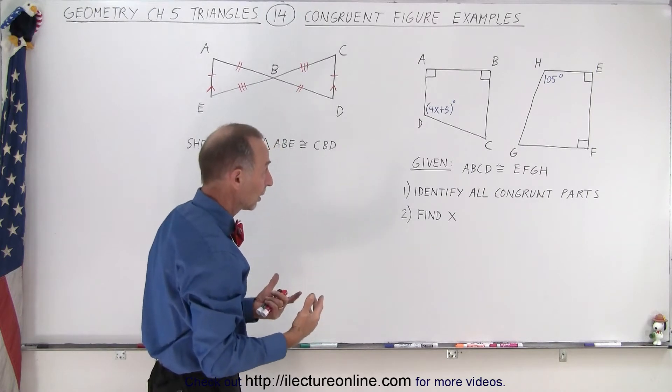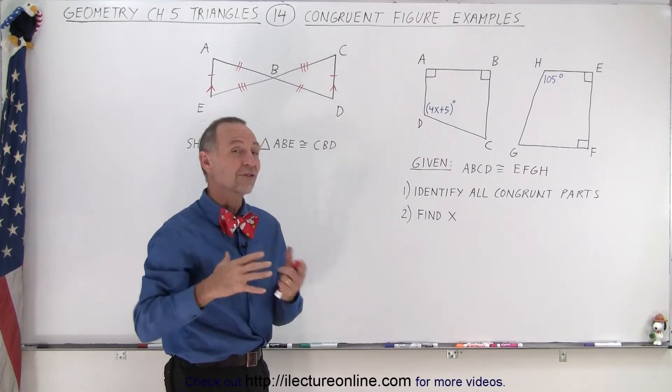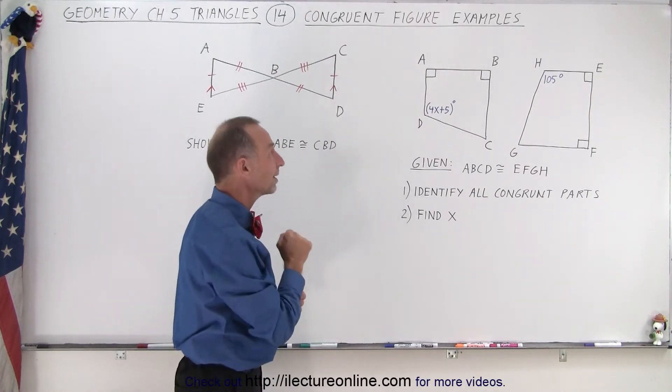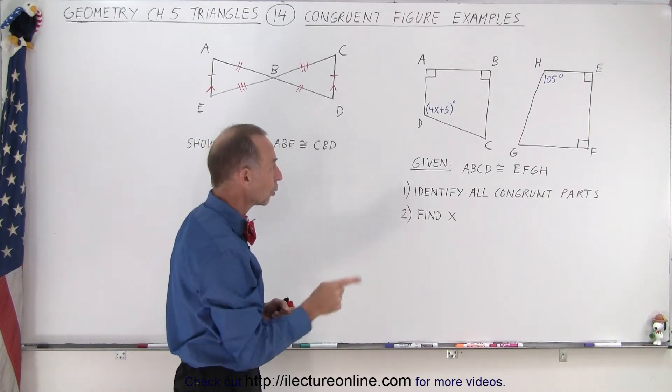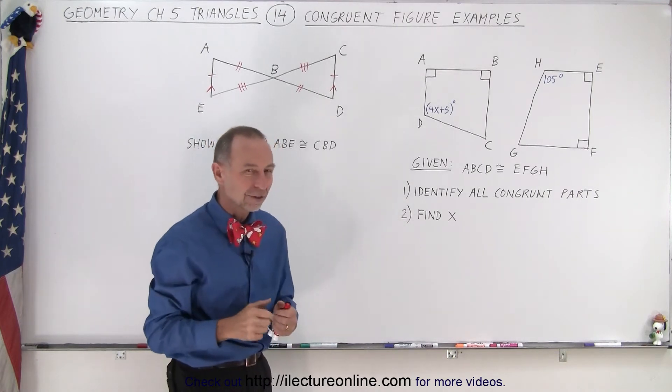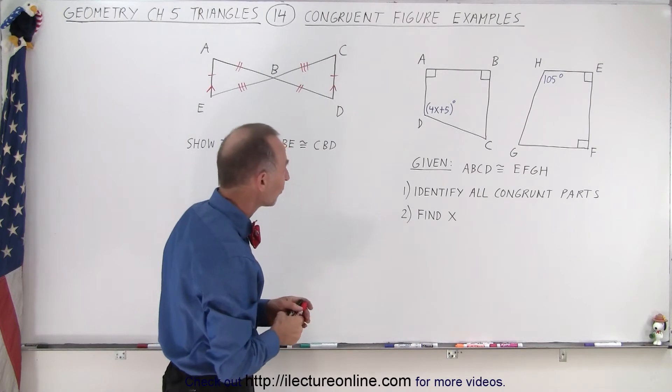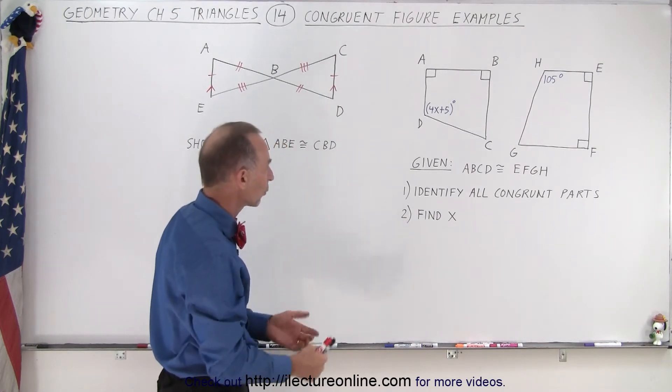So you can see then that if they tell us that these are congruent, that then implies that all the sides, or all corresponding sides have the same length, and all corresponding angles have the same angle. So let's try to find all the corresponding sides and all the corresponding angles.